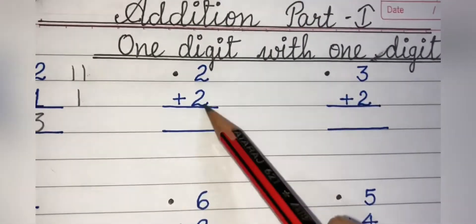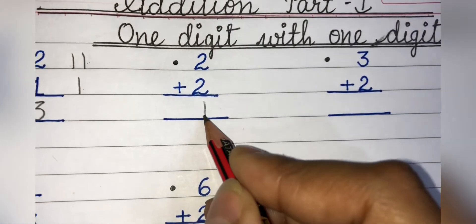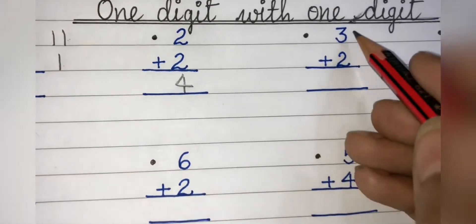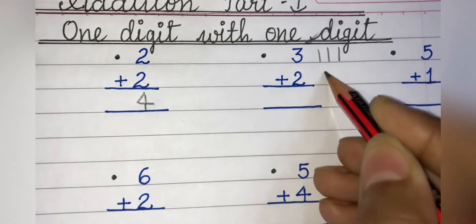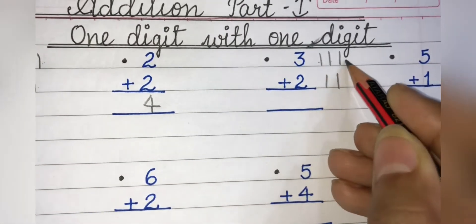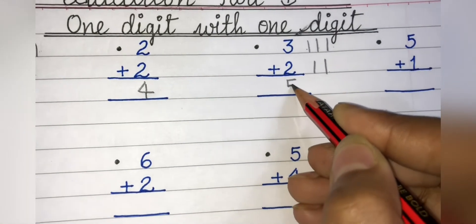Same way 2 plus 2 will be 4. 3 plus 2, let's make lines, 3 lines, then 2 lines, 1, 2, 3, 4, 5. The answer is 5.